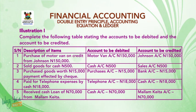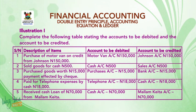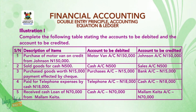Illustration one: complete the following table stating the account to be debited and the account to be credited. The table has four columns: serial number, description of items, accounts to be debited, and accounts to be credited. Number one — purchase of motor van on credit from Johnson, 150,000. Debit motor van account with 150,000 and credit Johnson account with 150,000.